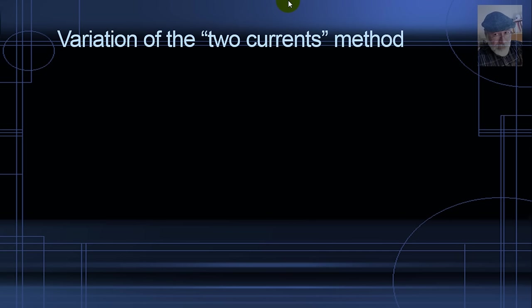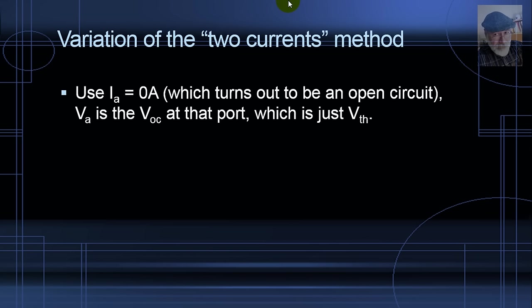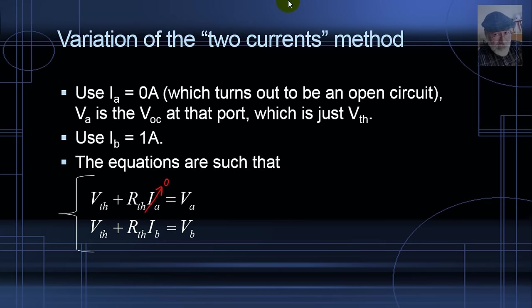A variation of the two currents method is one in which we use I_A equals zero, which turns out to be an open circuit test. And V_A would be the open circuit voltage, which is just V_TH. We use I_B then, any value. In this case, let me use 1A. And the equations turn out to be this one. I_A is 0, I_B is 1. Observe, easy equations. V_A is V_TH, and R_TH is just V_B minus V_A. Sweet.